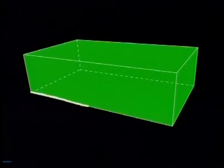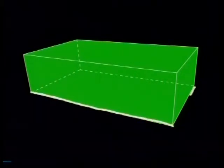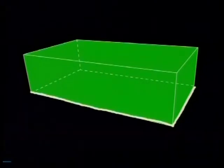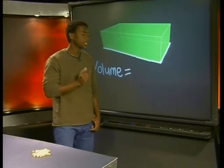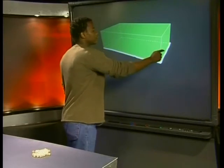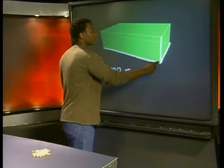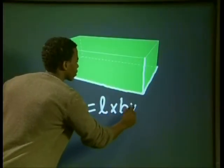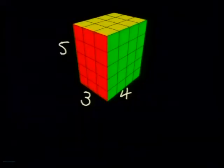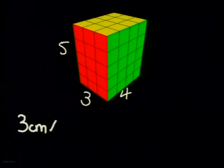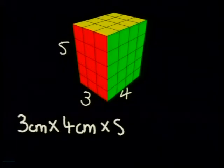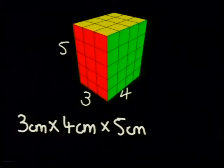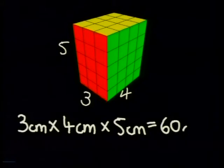In the area of the base, remember, you have used the length of the two edges of the right rectangular prism. So to find the volume of a right rectangular prism, we are multiplying the length of the edges — length times breadth times height. In this case, we actually just multiplied 3 centimeters by 4 centimeters by 5 centimeters, which gives us 60 cubic centimeters.